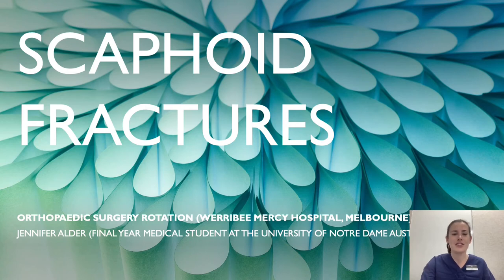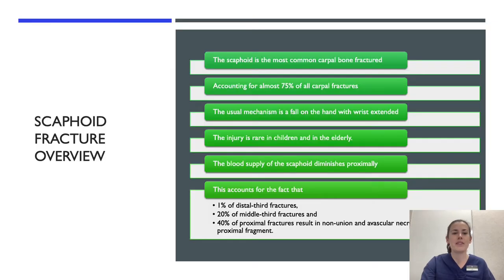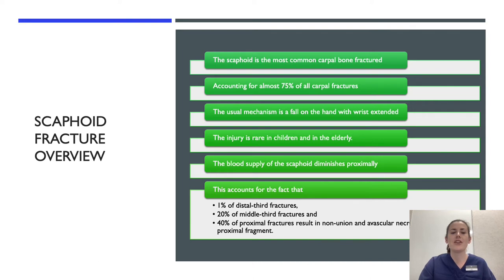This is a presentation on scaphoid fractures. The scaphoid is the most common carpal bone fracture, accounting for almost 75% of all carpal fractures. The usual mechanism is a fall on the hand with wrist extended, and the injury is rare in children and in the elderly. The blood supply of the scaphoid diminishes proximally, accounting for the fact that 1% of distal third fractures, 20% of middle third fractures, and 40% of proximal fractures result in non-union and avascular necrosis of the proximal fragment.